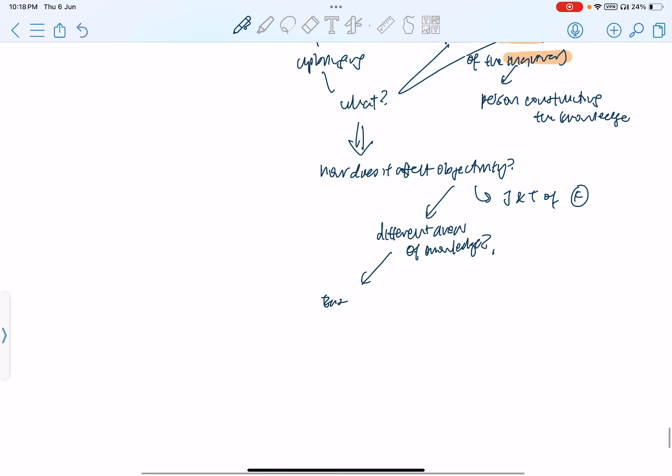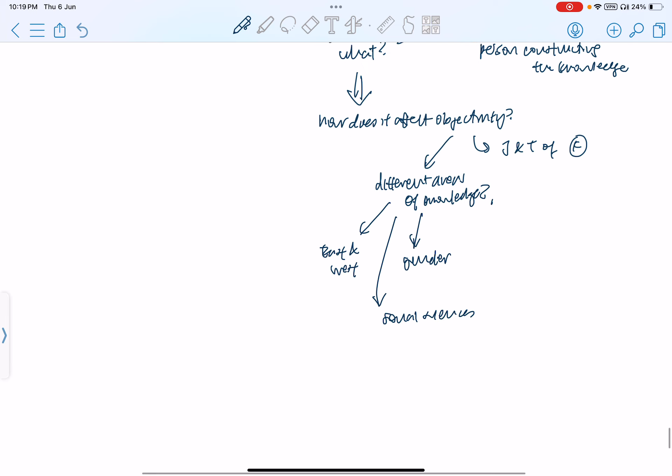And as for different areas of knowledge, let me just quickly list it down. Eastern and Western knowledge, we all know how there are different, very distinct and different spheres of thought in the East and the West, and there's gender, there's social sciences, and in social sciences we can think about anthropology.